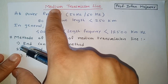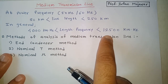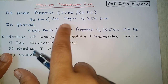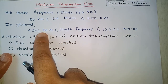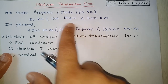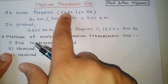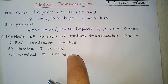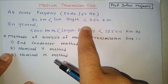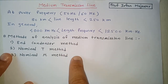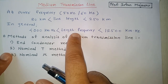In general, if the product of length times frequency is less than 12,500 km·Hz and greater than 4,000 km·Hz, the line is classified as medium. These numbers come from 50 Hz × 80 km = 4,000 km·Hz and 50 Hz × 250 km = 12,500 km·Hz. For example, a 25 Hz system with a 400 km line gives 10,000 km·Hz — also a medium transmission line.